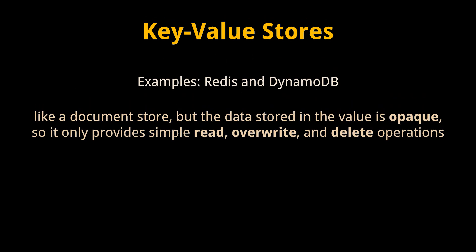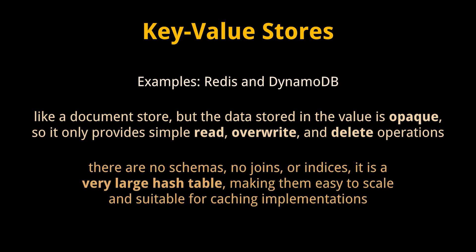The key-value store has no notion of what is stored in the value, so it only provides simple read, overwrite, and delete operations. There are no schemas, no joins, and no indices — it is essentially a very large hash table. Key-value stores are easy to scale and are particularly suitable for caching implementations. When the values need to be large, this kind of database is referred to as an object store or blob store.